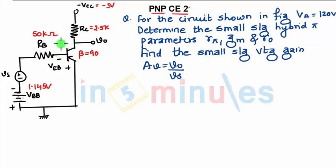So how to identify the type of transistor, as I have told you, arrow is always from P to N. So it is PNP type of transistor. Then which type of configuration: common base, common emitter, or common collector?